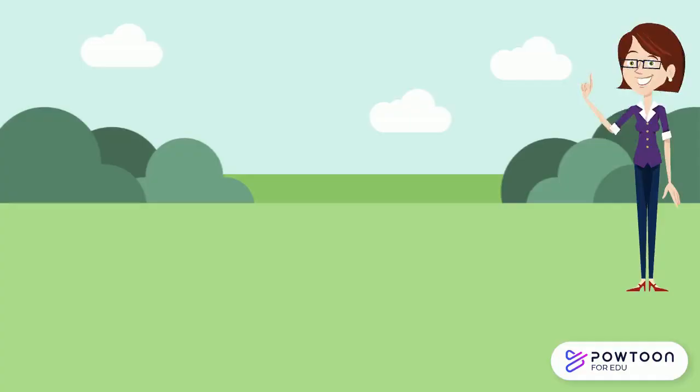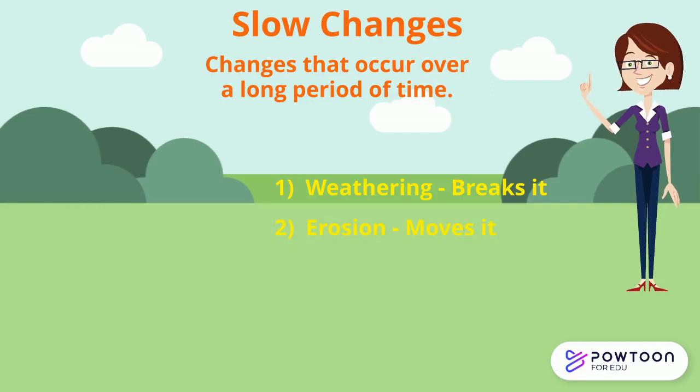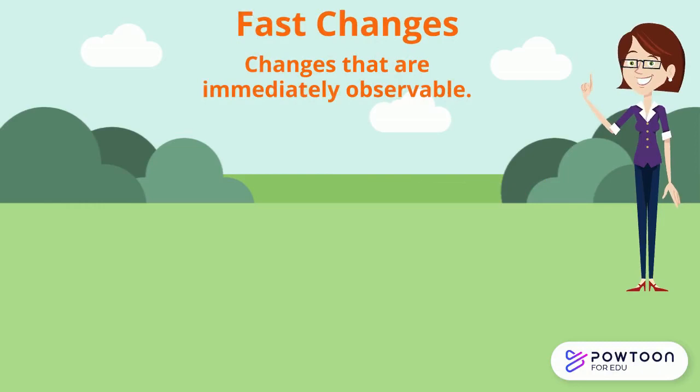Remember: slow changes are changes that occur over a long period of time — weathering breaks it, erosion moves it, deposition drops it. Fast changes are changes that you can see immediately, caused by volcanoes, earthquakes, and landslides.